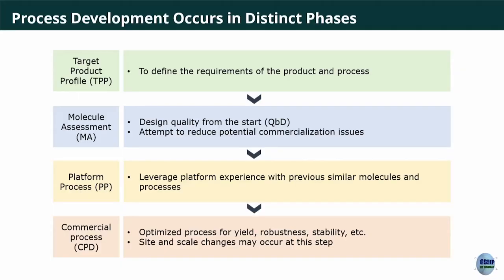A platform process means the infrastructure is standardized. If you've developed a process for insulin using E. coli, a fermenter, a purification unit, and a formulation unit, the next time you want to make erythropoietin you don't start from scratch — everything is ready-made; you just change the gene. It takes years to standardize a platform, but once you have one, efficiency becomes very robust.